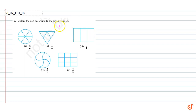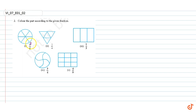In this question we have to color the part according to the given fraction. Part one: since the figure got six equal parts and we have to color one sixth of the part, we color one part in this way.